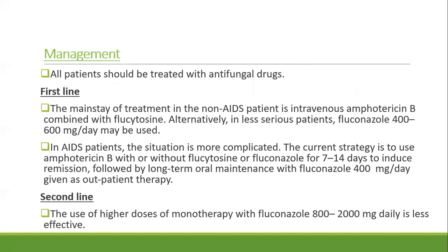All patients are treated with antifungal drugs. The mainstay of treatment in non-AIDS patients is intravenous amphotericin B combined with flucytosine. Alternatively, for less serious cases, fluconazole 400 to 600 mg may be used as an alternate to flucytosine. In AIDS patients, the current strategy is amphotericin B with or without flucytosine or fluconazole for 7 to 14 days to induce remission, followed by long-term oral maintenance with fluconazole 400 mg per day as outpatient therapy. Use of higher-dose monotherapy with fluconazole 800 to 2000 mg daily is less effective.